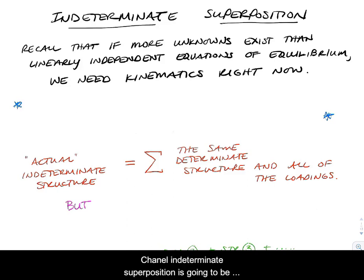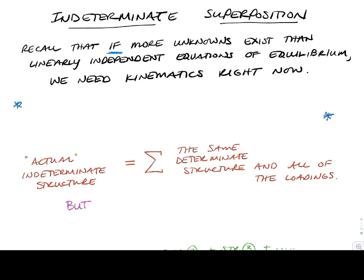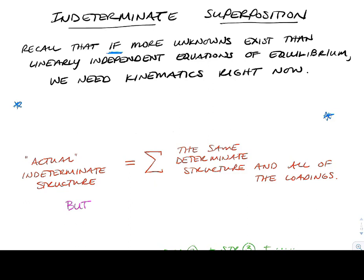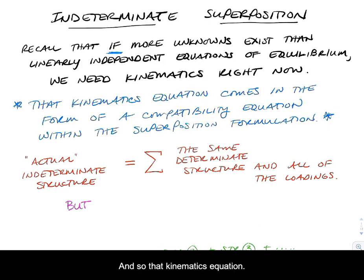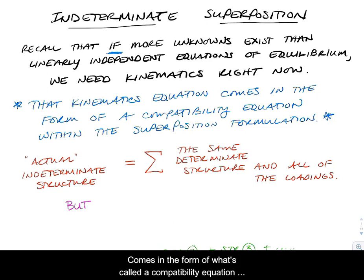Indeterminate superposition is going to be our focus. Recall that this is a huge issue: if more unknowns exist than linearly independent equations of equilibrium, we need kinematics. That kinematics equation comes in the form of what's called a compatibility equation within the superposition formulation.